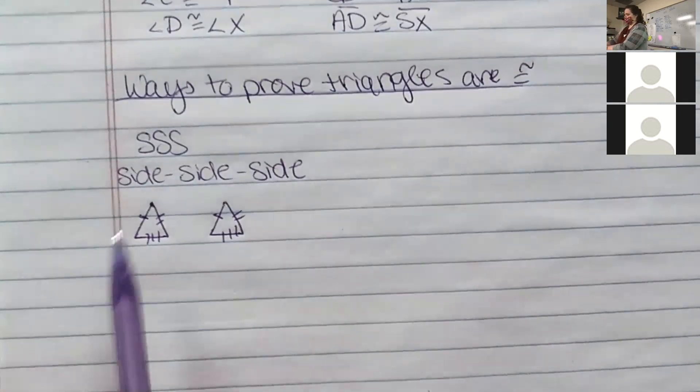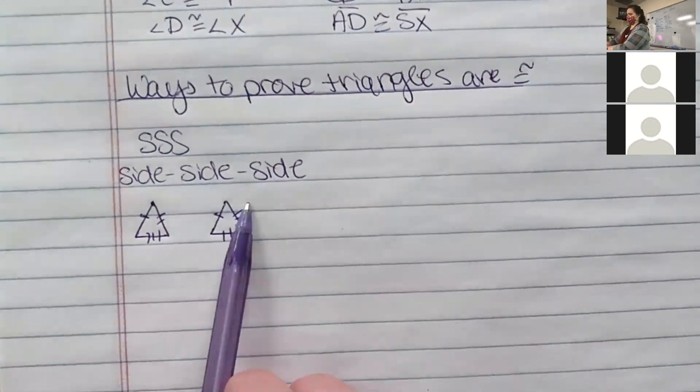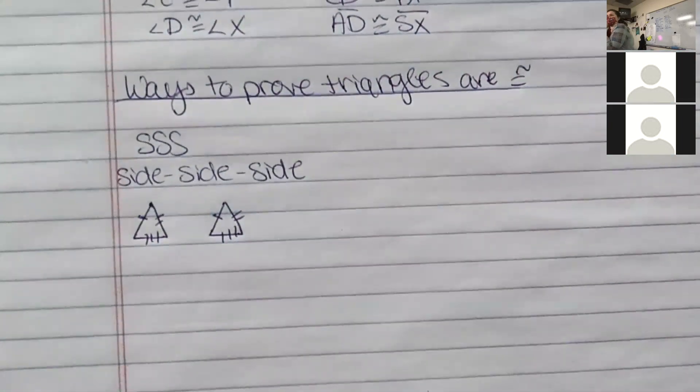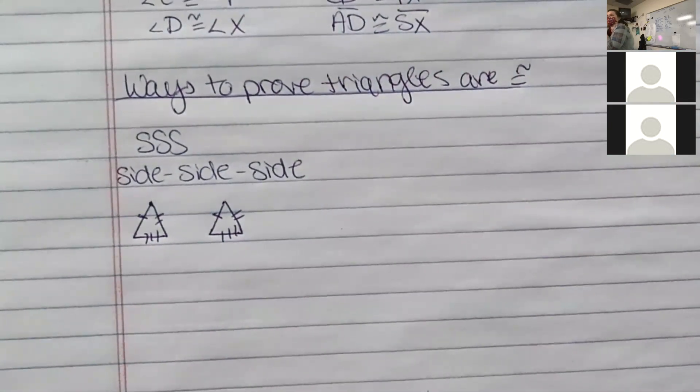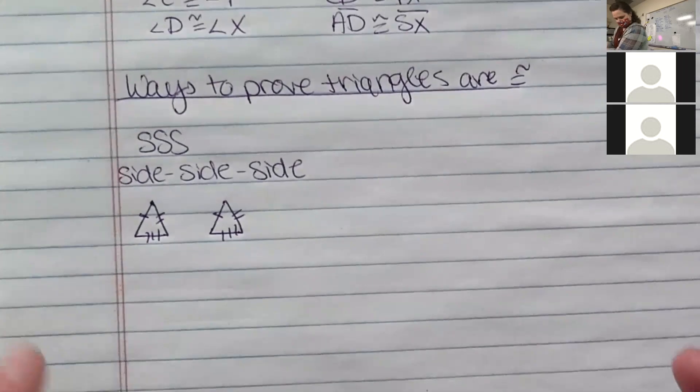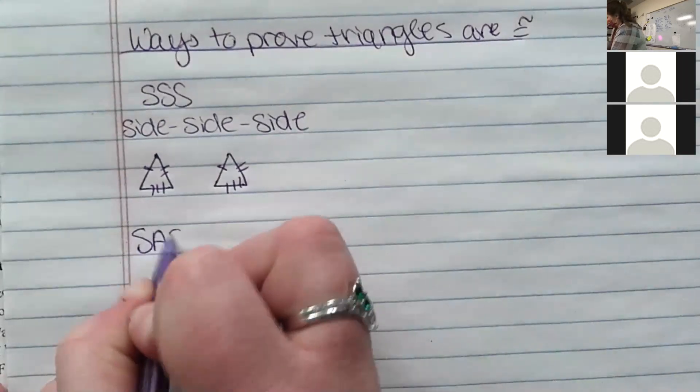Every single side has to be congruent to another side. When you have this, their angles are going to be congruent, because you can't make the exact same sides the same. That's why we can prove that.